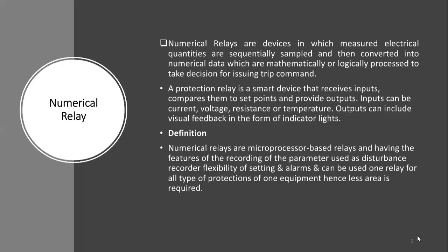These relays are, you can say, smart relays. A protection relay is a smart device that receives inputs, compares them to a set point, and provides outputs. Inputs can be current, voltage, resistance, or temperature — different electrical signals measured for a particular situation. Outputs can include visual feedback in the form of indicator lights. In these relays, one relay can have different indications. For example, if there is an over-current fault, then the over-current particular indication light will activate for that specific fault.